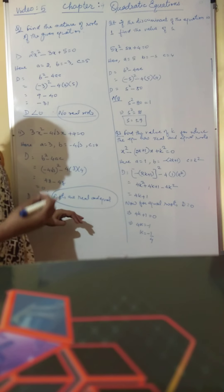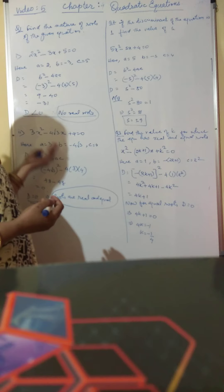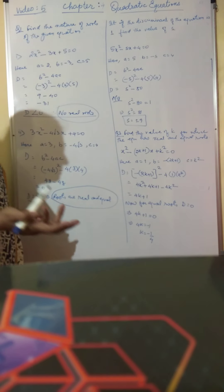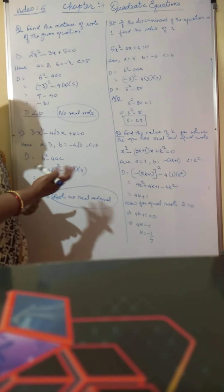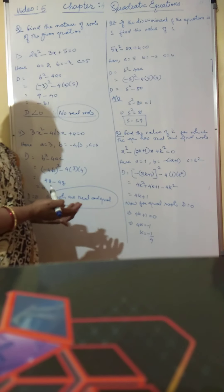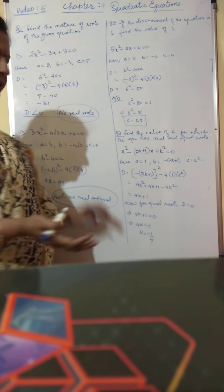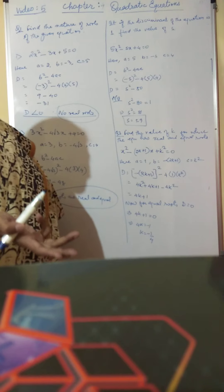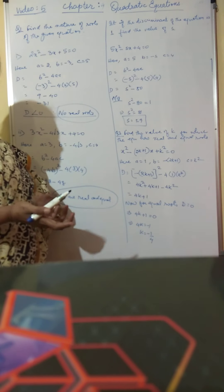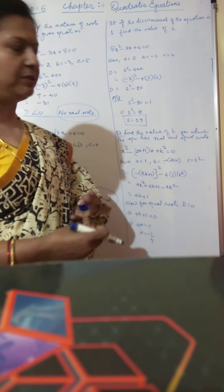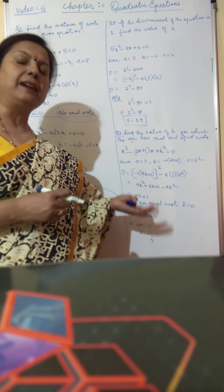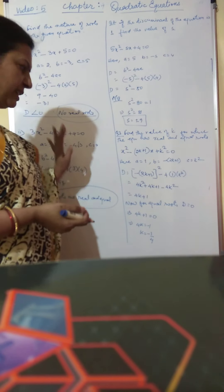When we find the roots of this equation we should get equal roots — that is its nature. The third case is when the value of D is greater than 0, that is positive. When the value of D is positive, the roots are real and unequal. So: if D is less than 0, no real roots; if D equals 0, real and equal roots; if D is greater than 0, real and distinct roots.